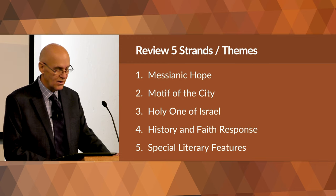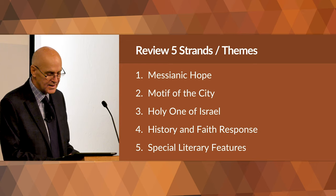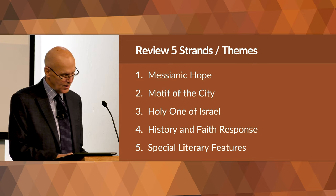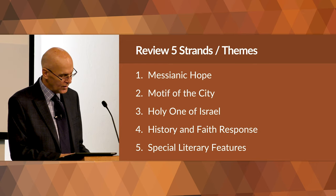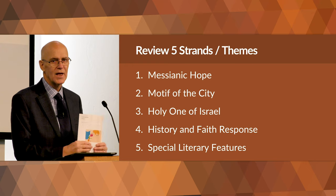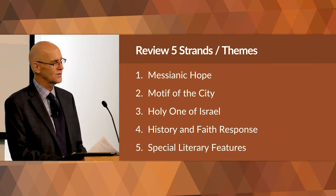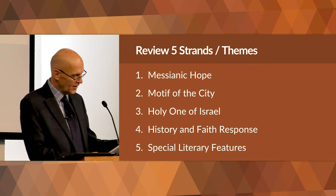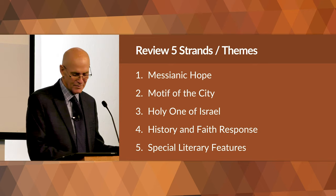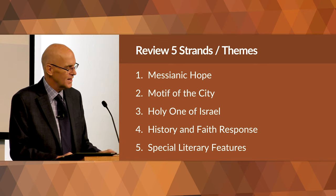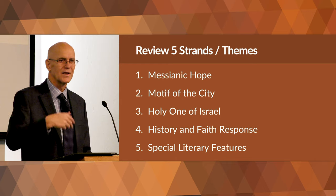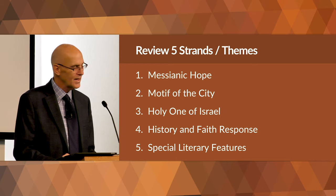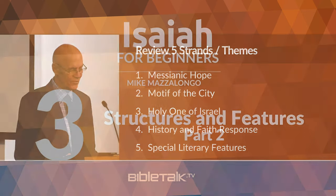So there's our third lesson in Isaiah. The five themes in review: one, the messianic hope as king, conqueror, and servant; two, the motif of the city — Jerusalem — representing God's people now, in the future, and at the end of time, referred to as Jerusalem, Zion, or the mountain; three, the Holy One of Israel who is transcendent, judge, and savior, also presented as creator, potter, and maker; four, the history and faith response of God's people, with the examples of Ahaz and Hezekiah; and next week, the special literary features particular to Isaiah. If the Lord is willing, in one or two more lessons we will actually open the book and read some of Isaiah's work and begin to interpret it.